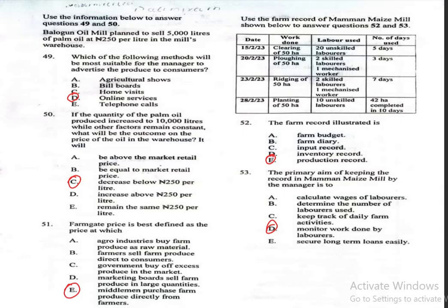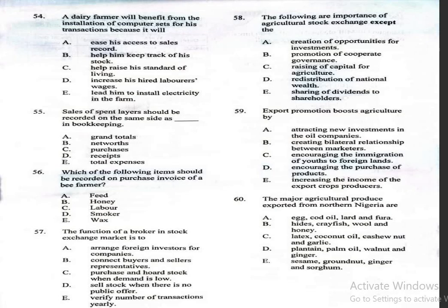Questions 54 to 60. Question 54: A dairy farmer will benefit from the installation of computer sets for his transactions because it will A, ease his access to sales records; B, help him keep track of his stock; C, help raise his standard of living; D, increase his hired labourers' wages; E, lead him to install electricity in the farm. The correct answer is B, it will help him keep track of his stock.